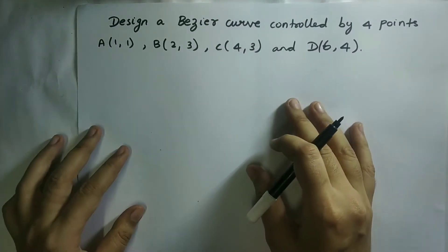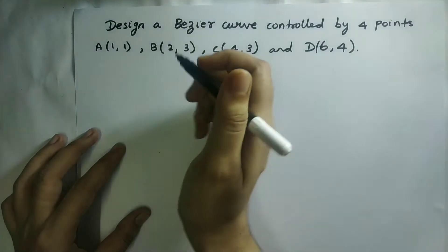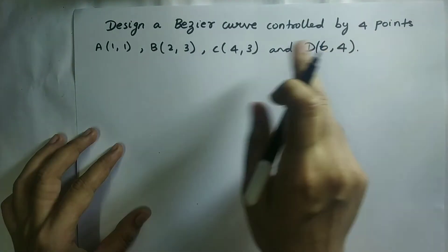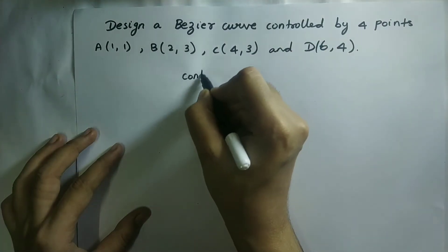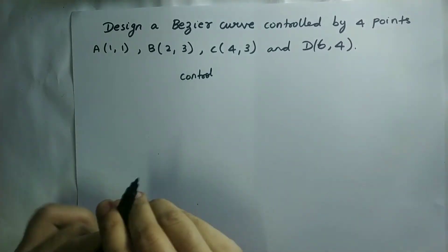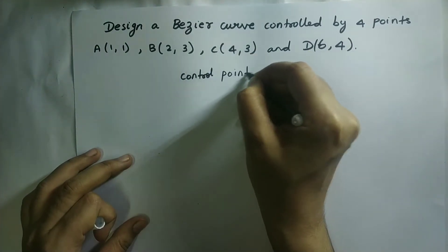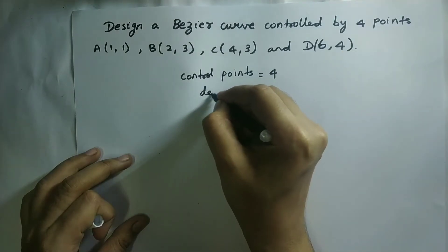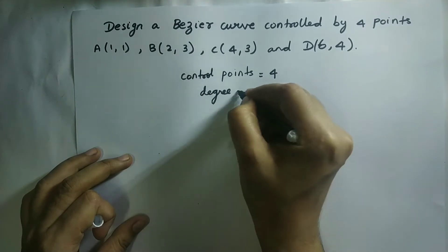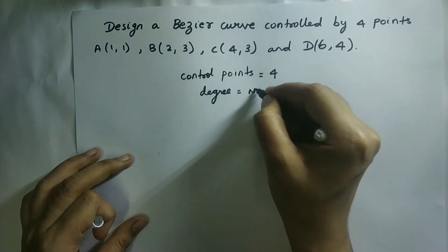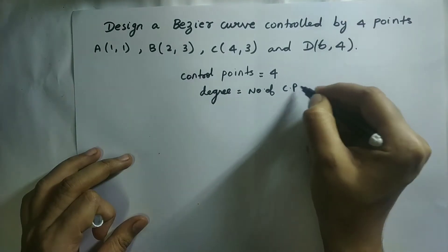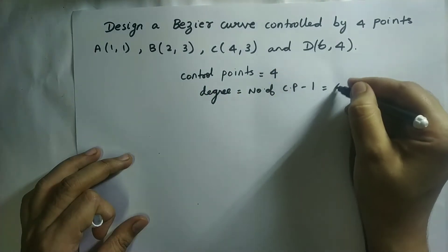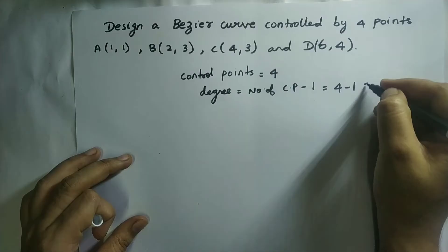Now let us solve this problem. Totally there are four control points. The degree is equal to the total number of control points minus one. Since there are four control points, four minus one equals three.